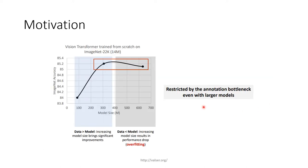This graph outlines the problem. The x-axis represents the model size and the y-axis represents the image accuracy. When the data is greater than the model size, the model brings significant improvements in accuracy. However, when the data is less than the model size, the accuracy dips.